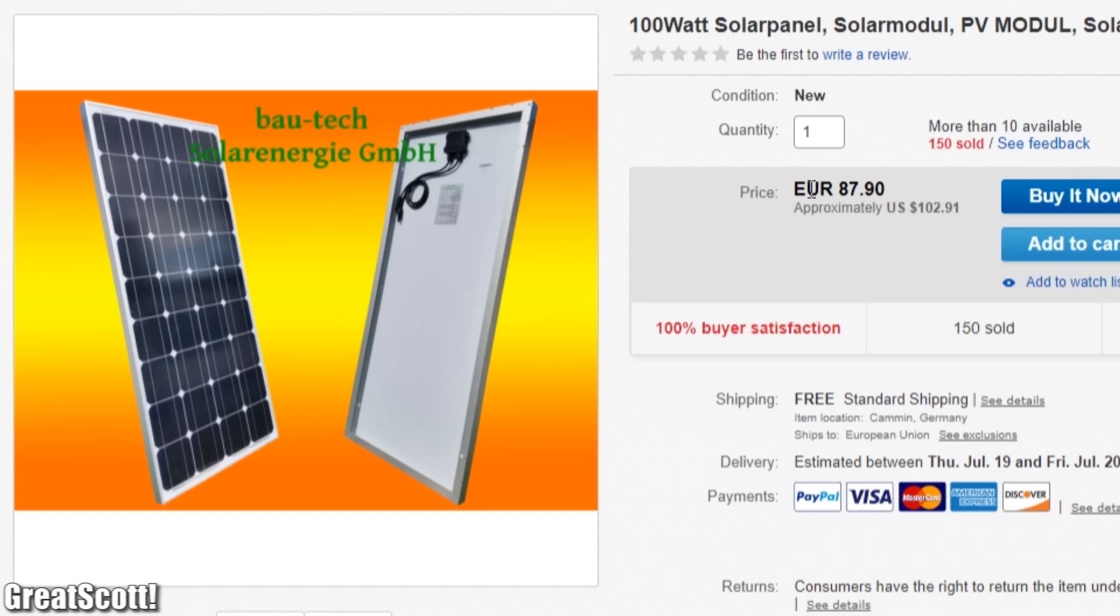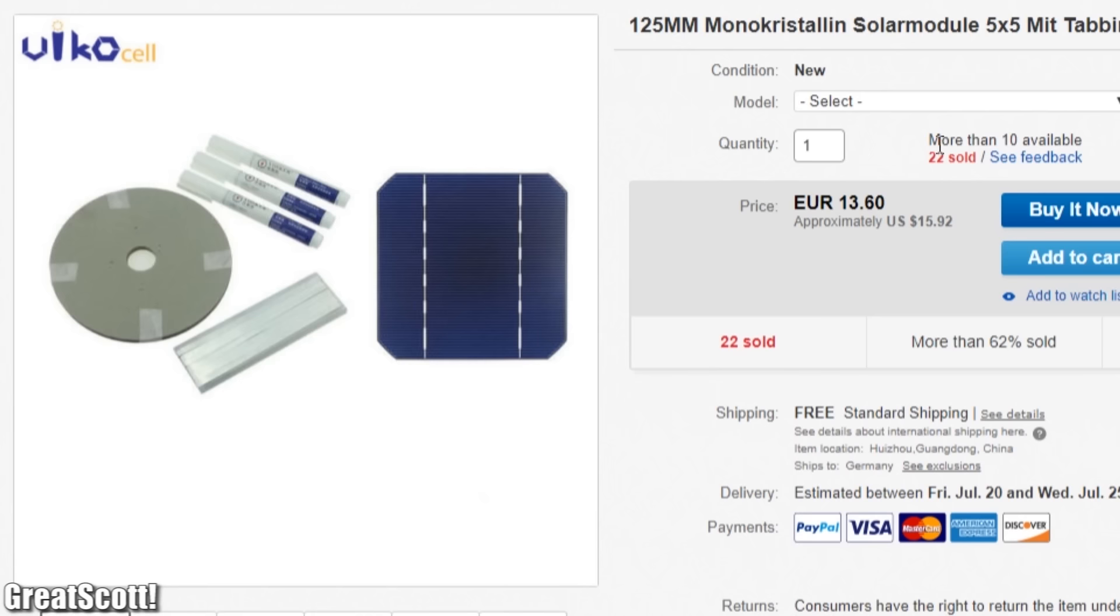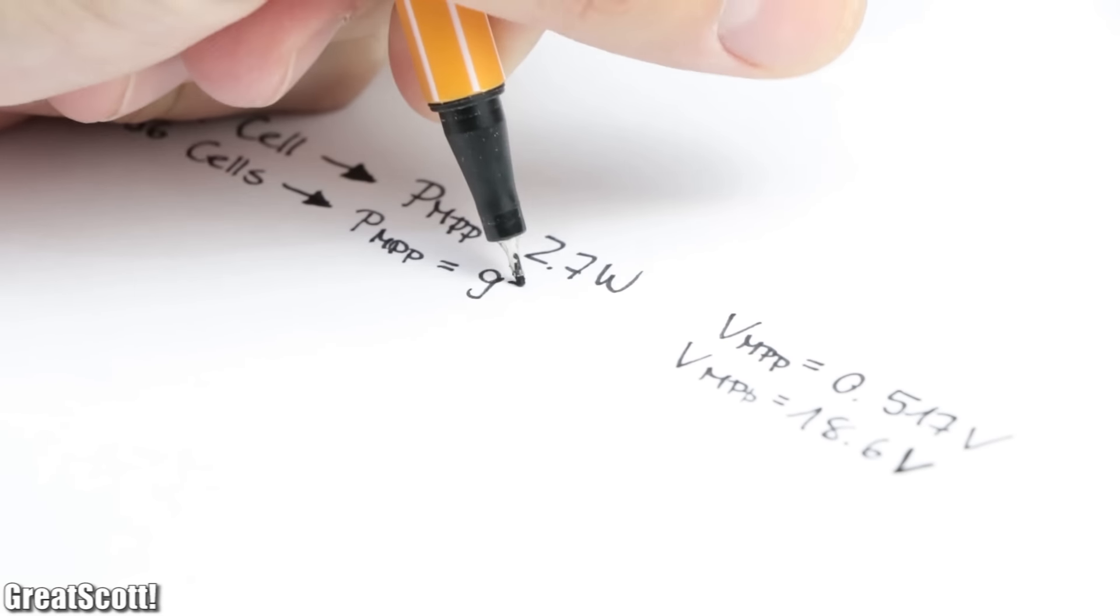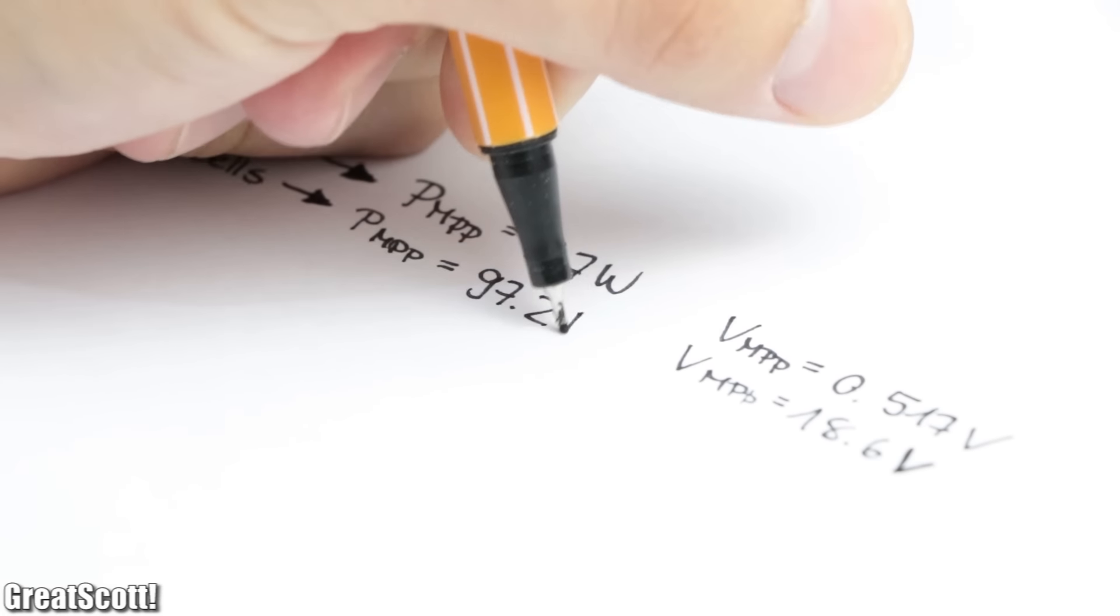The only problem with such commercial solar panels is that they are not very cheap. But on the other hand, you can get 40 individual solar cells for half the price of the commercial panel and simply combine 36 of them to get a 100 watt panel as well.